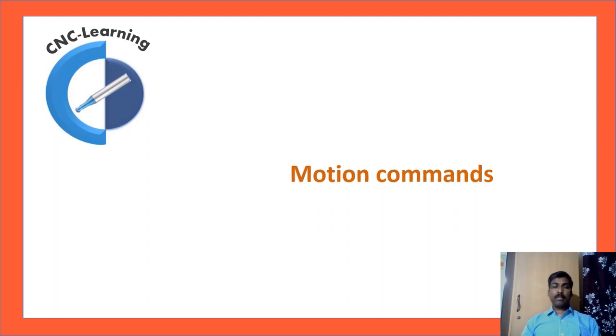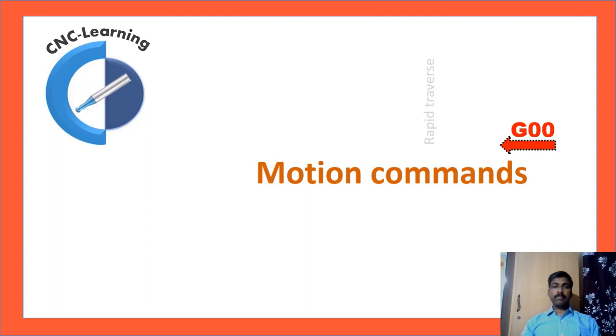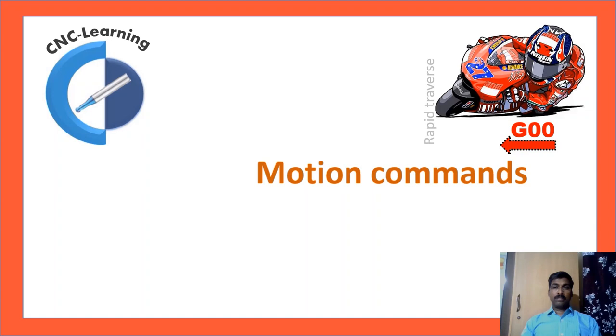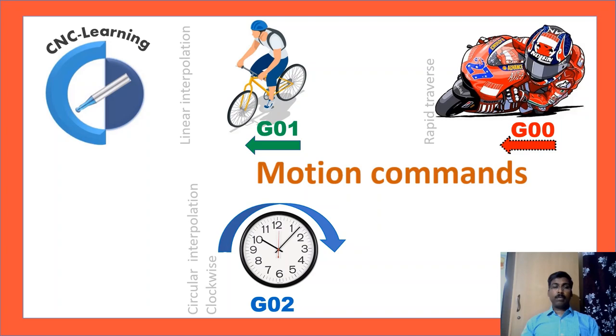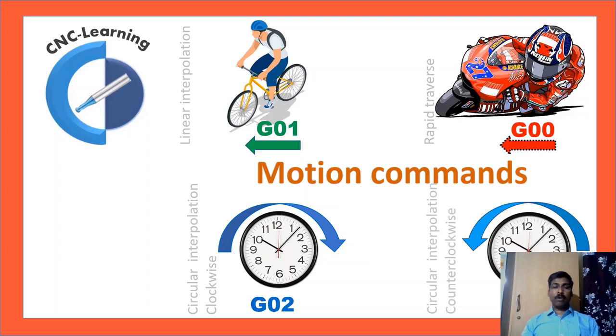Now we will see the motion commands. G00, that is rapid traverse. So you can see a superbike. So it is compared with the speed of a superbike. G01, linear interpolation. The speed is compared with that of a bicycle. G02, circular interpolation clockwise. G03, circular interpolation counterclockwise.